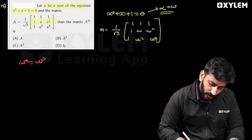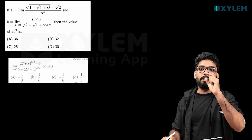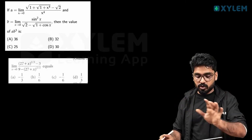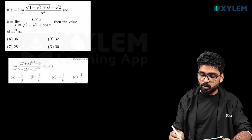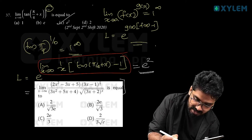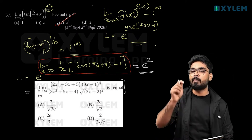What is the 4th? Omega cube into omega. Omega cube. One power infinity formula.